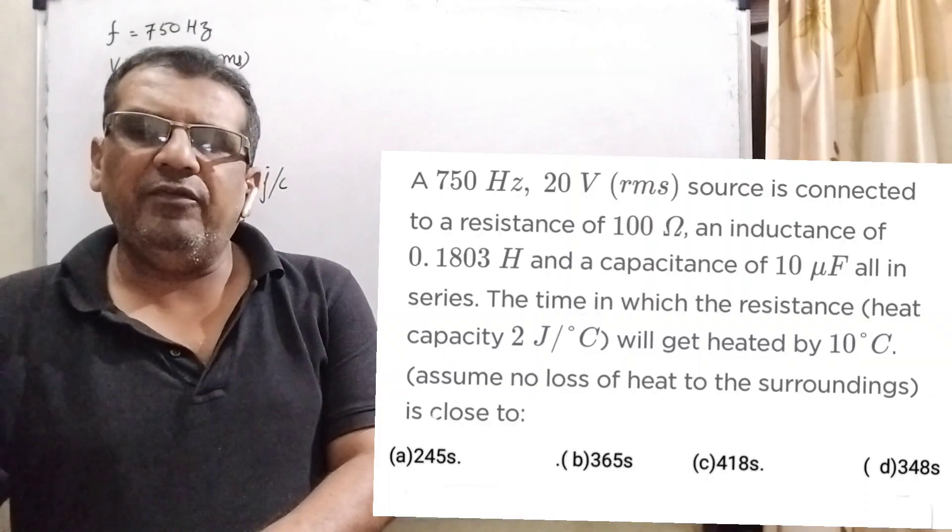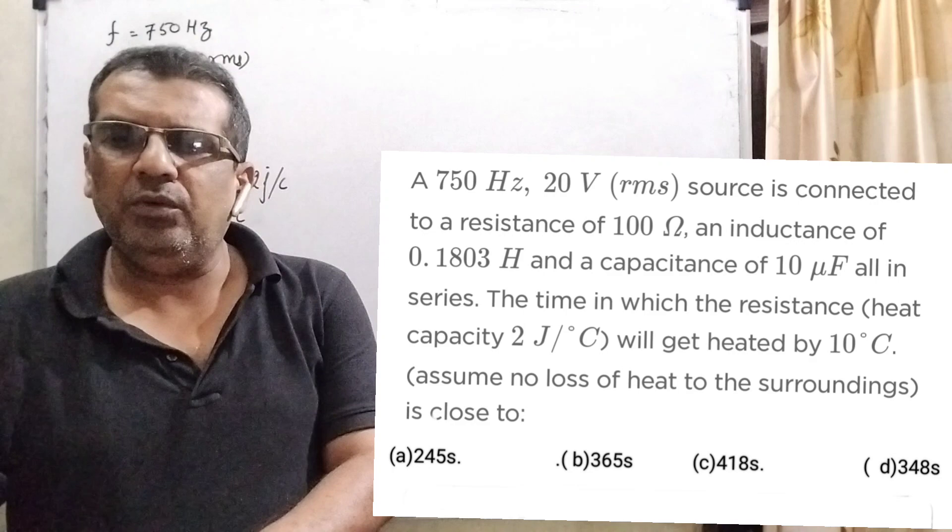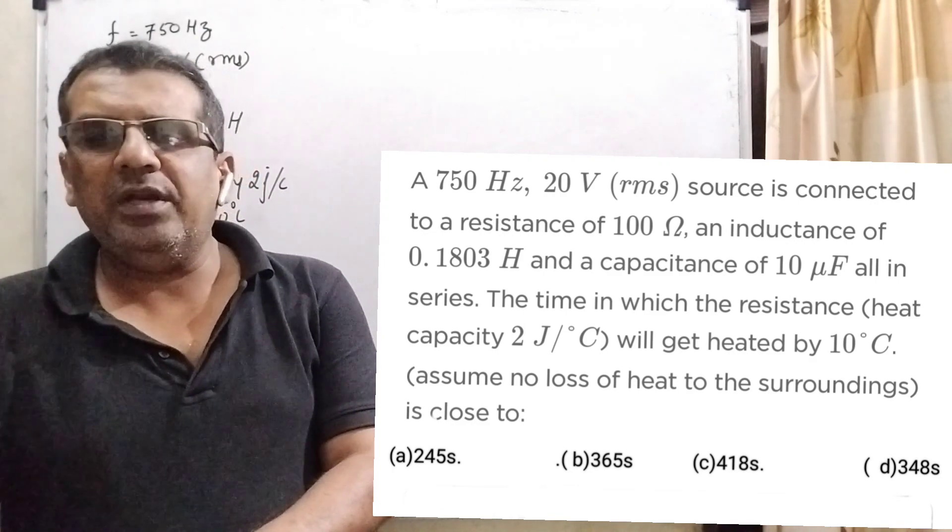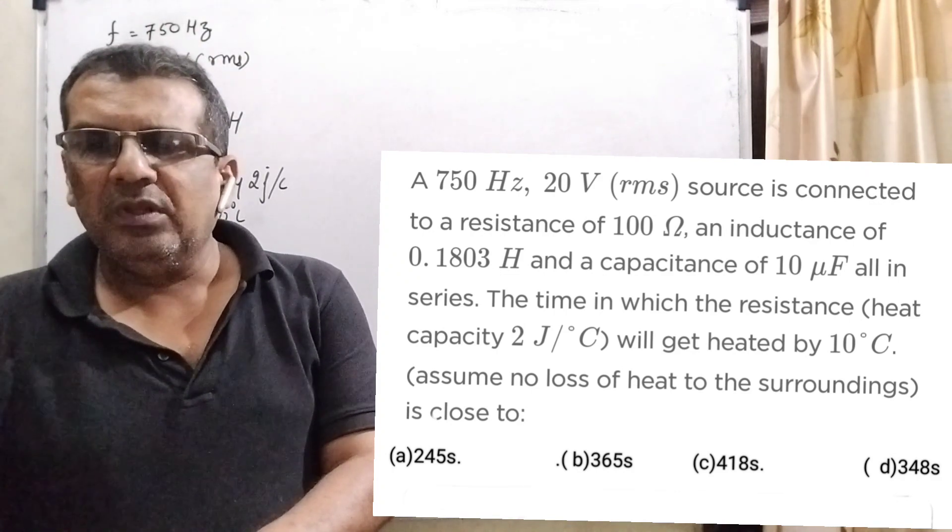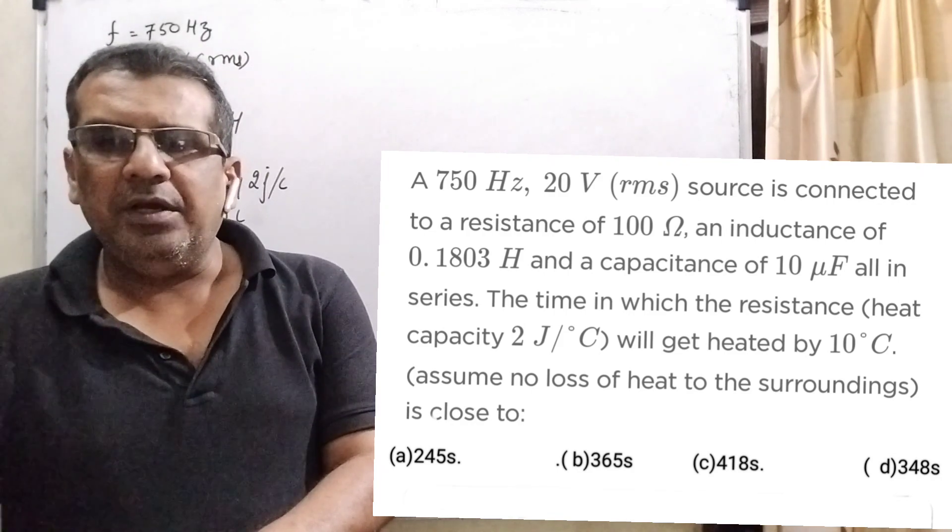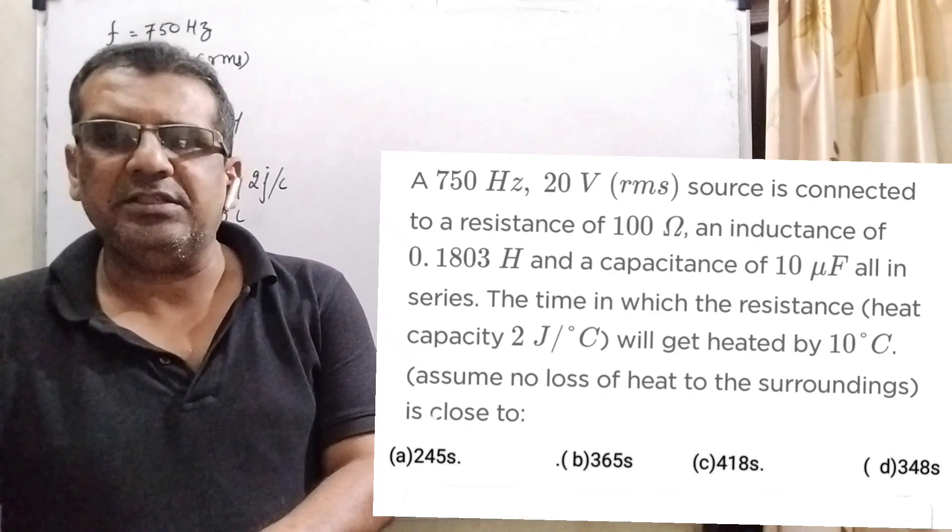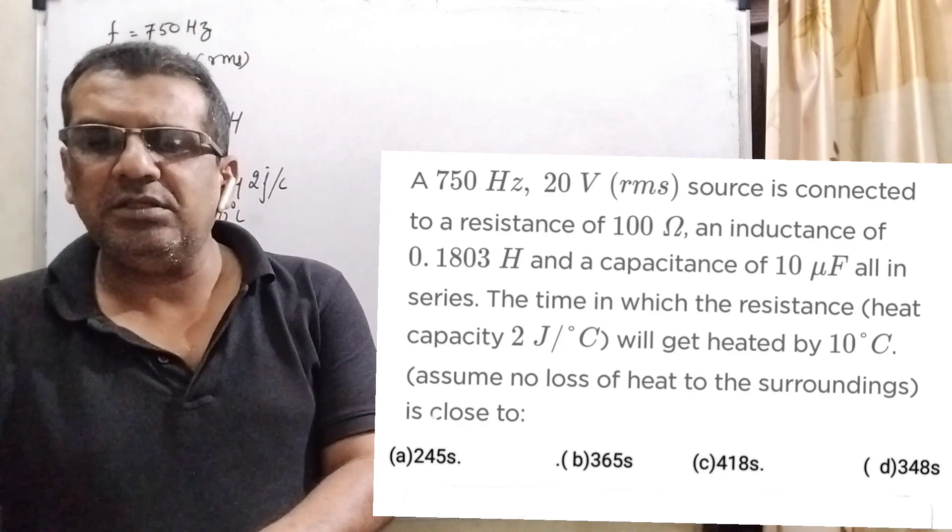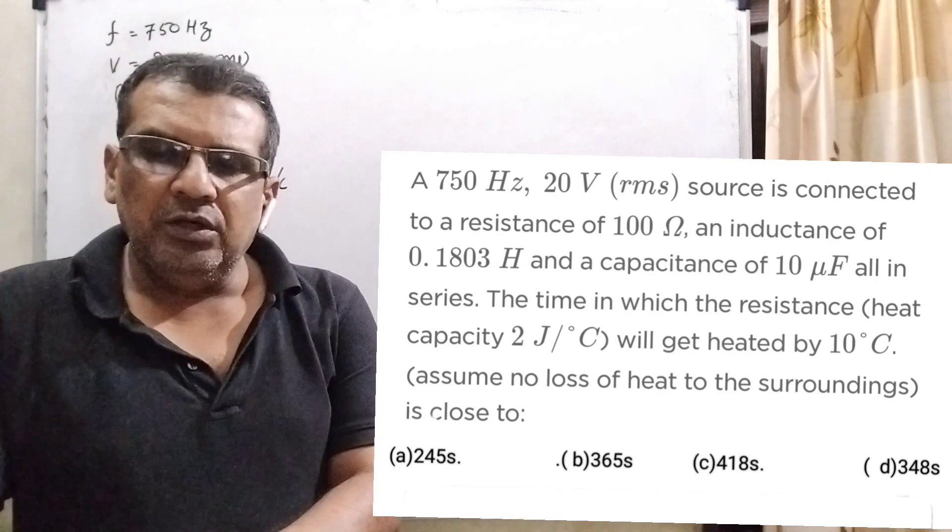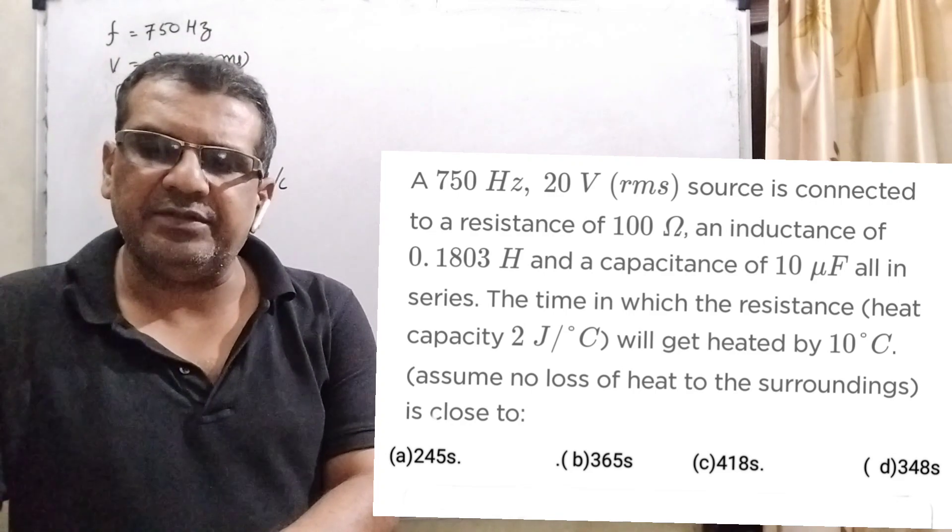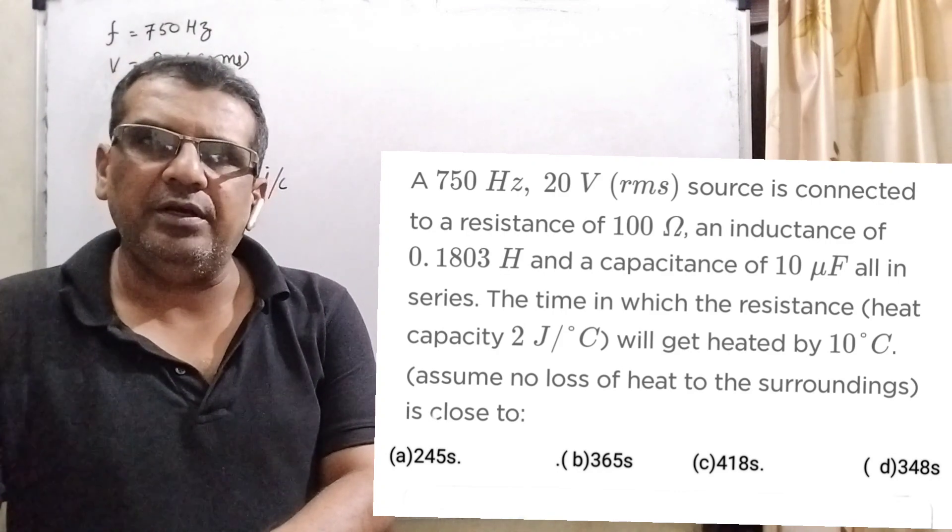Now here is the question. A 750 Hz, 20V RMS source is connected to a resistance of 100 Ohm, an inductance of 0.1803 H, and a capacitance of 10 microfarad in series. The time in which the resistance heat capacity, given that 2 joule per degree centigrade, will get heated by 10 degree Celsius. Assume no loss of heat to the surroundings is close to. Here we have given four options. Option first, 245 second. Option B, 365 second. Option C, 418 second. And option D, 348 second.